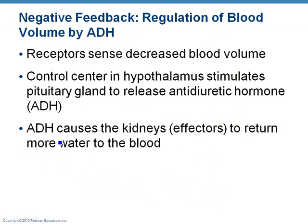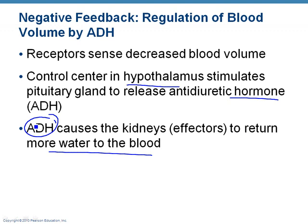Here's another example: blood pressure. Changes in blood pressure send signals to the hypothalamus in your brain. It releases a hormone — so this is the nervous system and endocrine system working together — telling the kidneys to save water. This is called anti-diuretic hormone, which means you don't make as much urine, so you conserve water, and that brings your blood pressure back up.